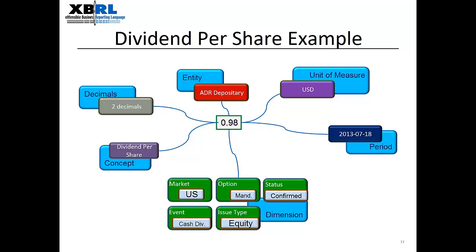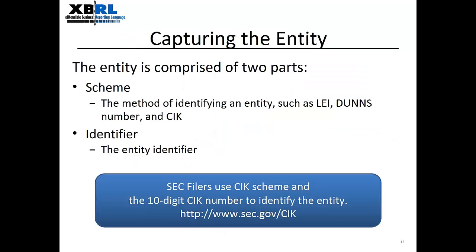Looking at the information in green on this diagram, XBRL can also tell the end user that the event is a cash-only dividend, that the entity is US-based, that the event is mandatory, that it represents a form of equity security, and that the status of the event has been confirmed. One of the most important things to capture is the entity itself. XBRL can report on the entity by relying on a particular scheme such as the CIK used by the SEC, the LEI or legal entity identifier, or the DUNS number.